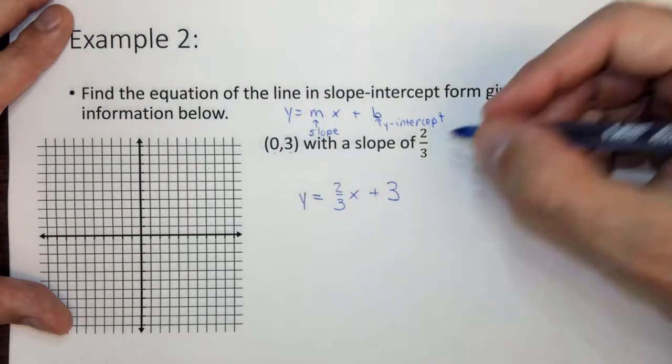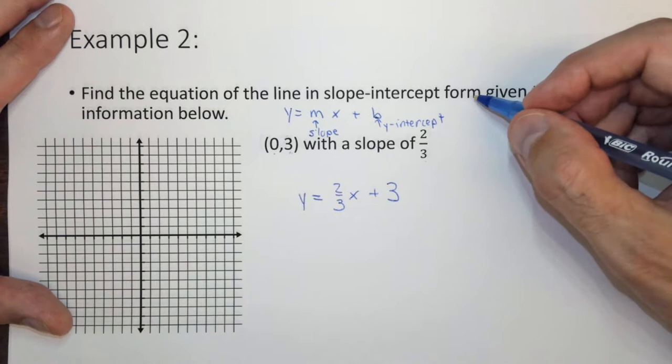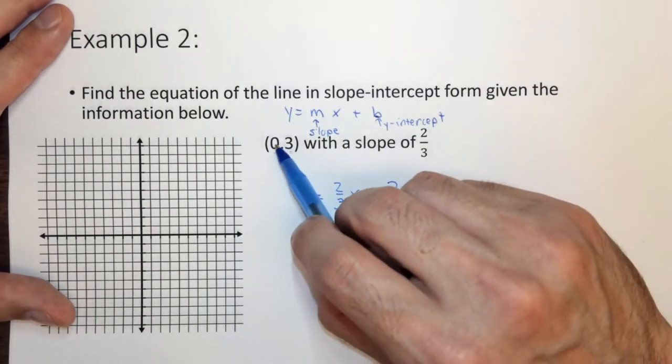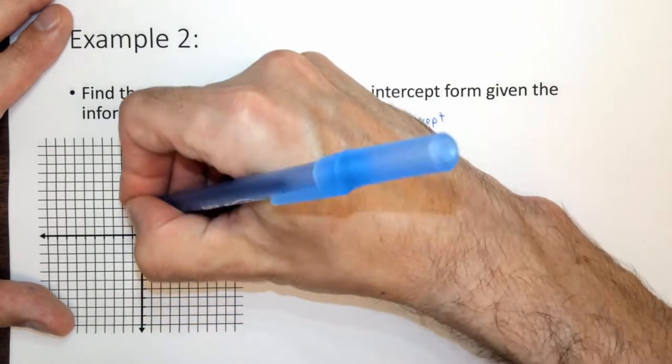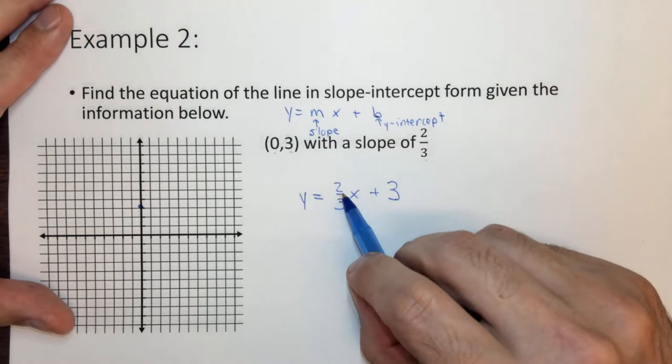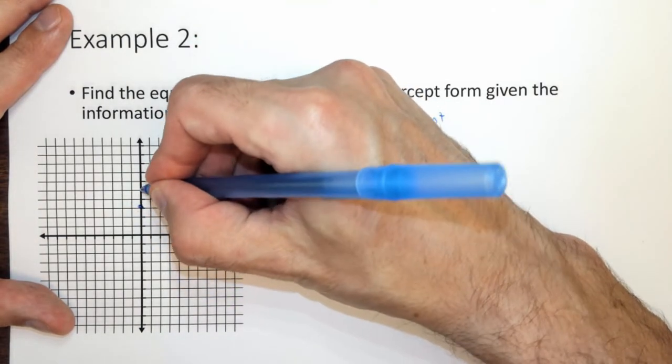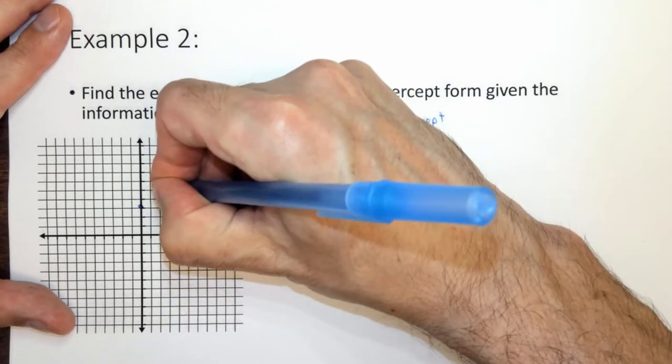When x is 0, you're at the y-intercept, and the slope of the line is 2 over 3. Note that if you actually wanted to see what a graph of this line looks like, what you would want to do is go to this point, 0, 3. So 0, 1, 2, 3 on the y-axis, make a point. Now the slope is 2 thirds. That means we go up 1, 2, and over 3. 1, 2, 3. And we put a point.